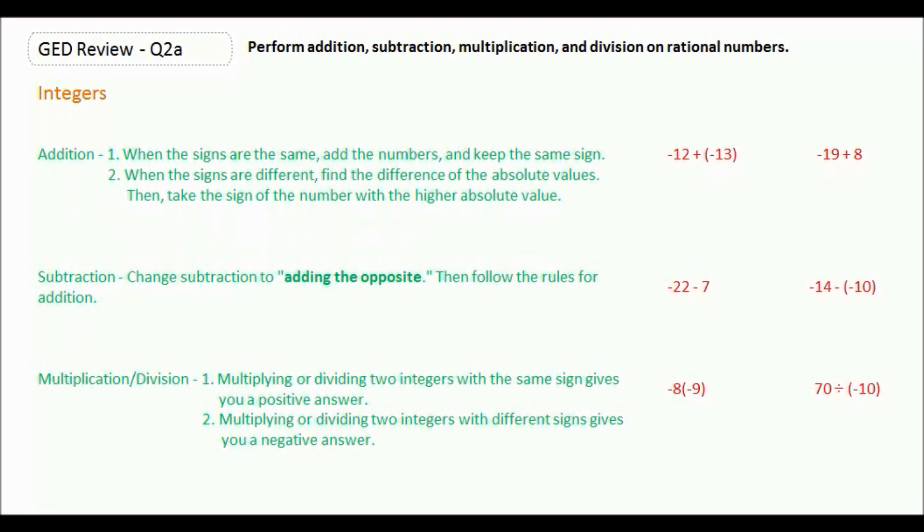So negative 12 plus negative 13 means you're going to add your numbers to get 25, and since they're both negative, our answer is negative 25. When the signs are different, you're going to find the difference of the absolute values, then take the sign of the number with the higher absolute value.